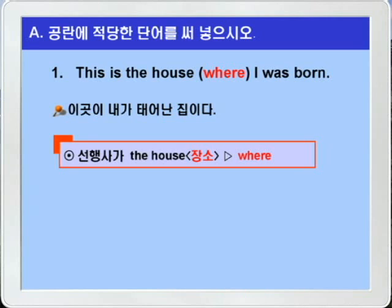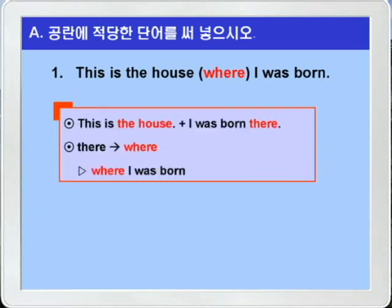1번에 대해서 더 자세하게 설명하도록 하죠. 'This is the house where I was born.' 이 문장은 'This is the house'(이곳이 그 집이다)와 'I was born there'(나는 그곳에서 태어났다), 이런 두 문장이 결합된 문장입니다. 공통 부분인 the house와 there에서 the house는 선행사가 되고 장소의 부사 there는 장소의 관계 부사 where로 바뀌어 where I was born이라는 형용사절이 되어 선행사 the house 뒤에 연결됩니다. 관계 대명사는 접속사+대명사의 역할을 하면서 형용사절을 이끌지만, 관계 부사는 접속사+부사 혹은 접속사+부사구의 역할을 하면서 선행사를 수식하는 형용사절을 이끌죠. 비교하시기 바랍니다.